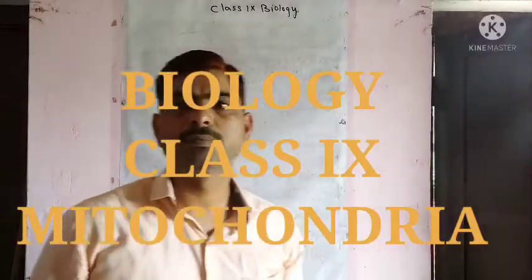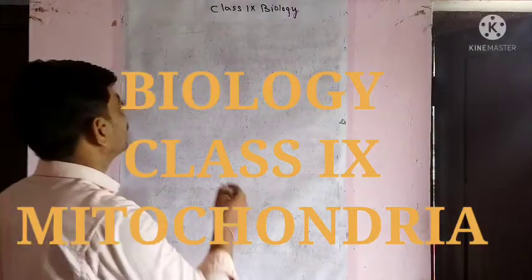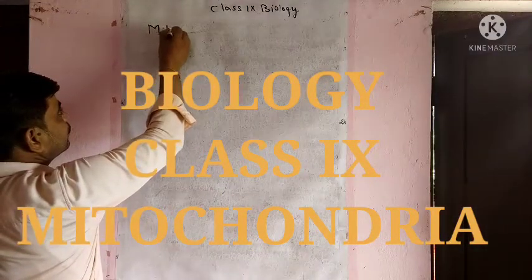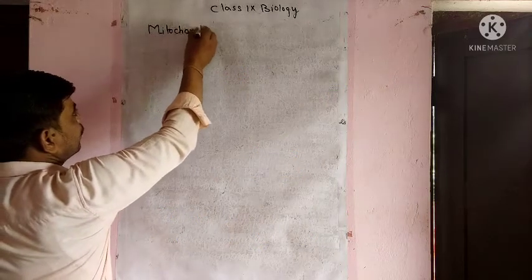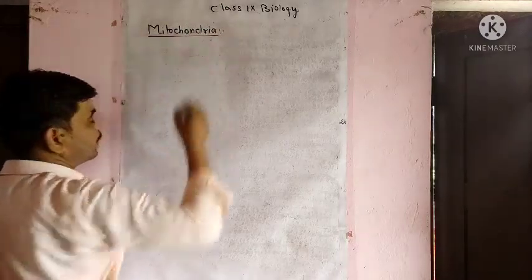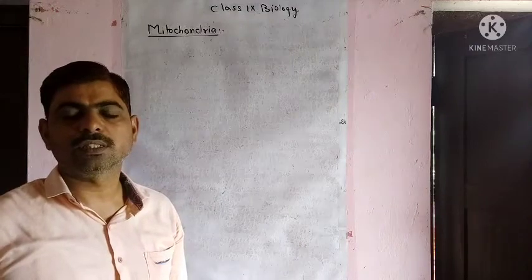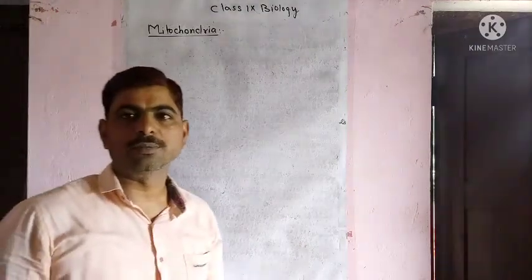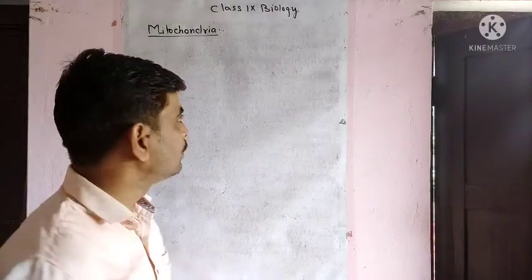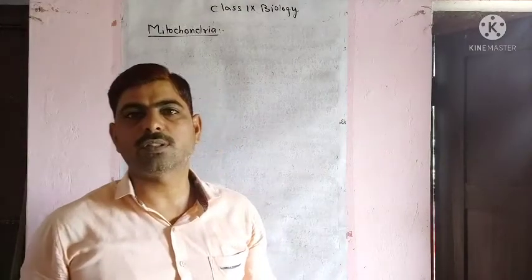Hello everyone, welcome back in biology class. Today we will start a new topic in this chapter: mitochondria. Mitochondria is a very small, rod-shaped organelle and very important for cellular respiration to release energy that is required to carry on different energy-requiring activities of the cell. Mitochondria is visible under a light microscope, but its detailed structure can be revealed only by using an electron microscope.